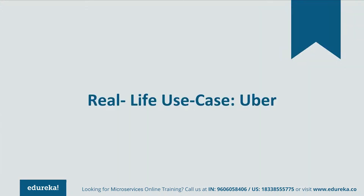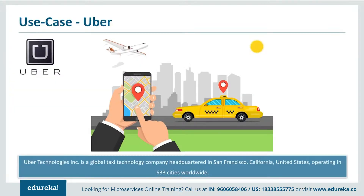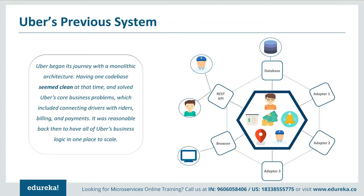Let's look at a real-life use case of Uber. Uber Technologies is a global taxi technology company headquartered in San Francisco, United States, operating in 633 cities worldwide. Like many other startups, Uber also started its journey with a monolithic architecture for a single city. Initially, they had a REST API connecting passengers and drivers, with a mobile API connected to the REST API and a monolithic backend server. For web UI users, they were also connected to the same server. There were three adapters for functionalities such as notifications, sending mails or messages, billing, and payment. Finally, a MySQL database captured all their data.